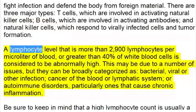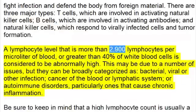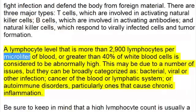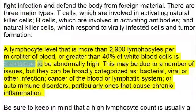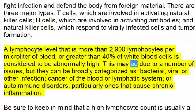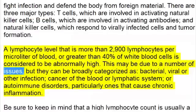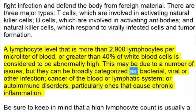A lymphocyte level that is more than 2,900 lymphocytes per microliter of blood, or greater than 40% of white blood cells, is considered to be abnormally high. This may be due to a number of issues,